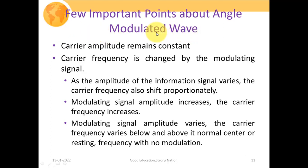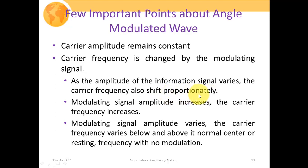A few important points about angle modulated waveforms: first, the carrier amplitude remains constant — unlike in AM where amplitude changes. In the phase and frequency modulated waveforms we've seen, the peak amplitude remains the same. Carrier frequency is changed by the modulating signal, since we want to transfer information from source to destination. As the amplitude of the information signal varies, the carrier frequency shifts proportionately — if modulating signal amplitude increases, carrier frequency increases, and vice versa.